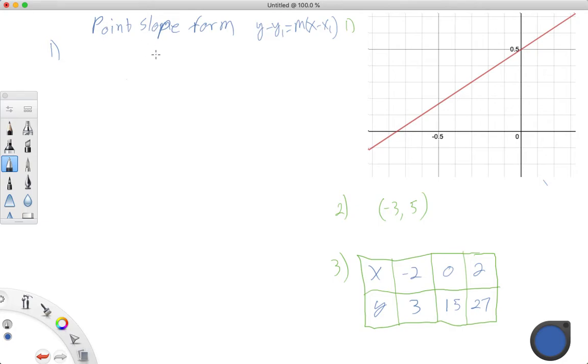So point-slope form from a graph. You don't really get it from a graph. What you do is you find your points. So there's that and that. And this would be, let's see, these are tenths. So 0.1, 0.2, 0.3. So this is 3 tenths, or 0.3, and this is also 3 tenths.